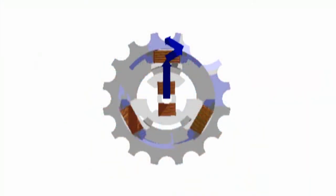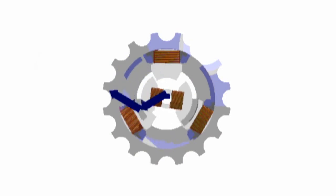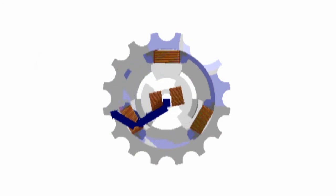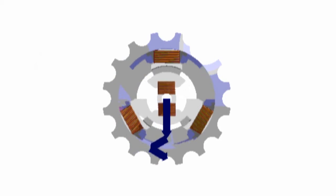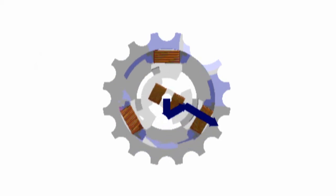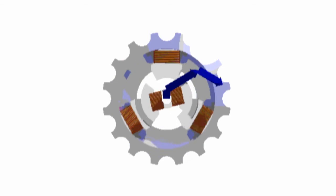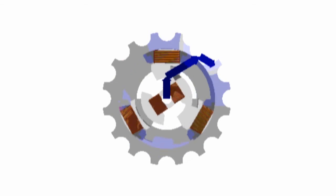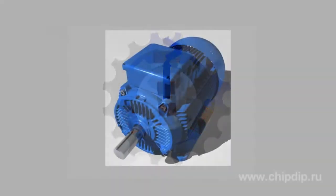Step motors are electric motors with a finite number of rotor positions. A desired rotor position is fixed when energizing a corresponding winding. Switching to another position is possible by de-energizing one winding and energizing another.